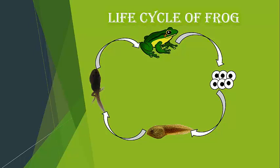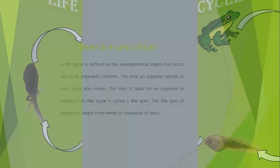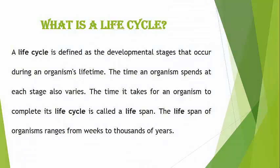So let's start. First of all, we need to know: what is a life cycle? A life cycle is defined as the developmental stages that occur during an organism's lifetime. The time an organism spends at each stage also varies. The time it takes for an organism to complete its life cycle is called a life span, and the life span of an organism ranges from weeks to thousands of years.